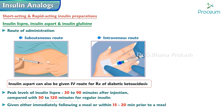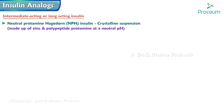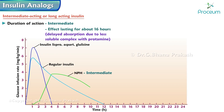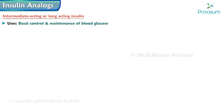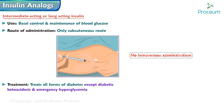Intermediate-acting insulin — Neutral Protamine Hagedorn (NPH) insulin is a crystalline suspension made up of zinc and a polypeptide protamine at a neutral pH. Its duration of action is intermediate, lasting about 16 hours, due to delayed absorption from the less soluble complex with protamine. It is used for basal control of blood glucose and should be administered subcutaneously only — no intravenous administration.